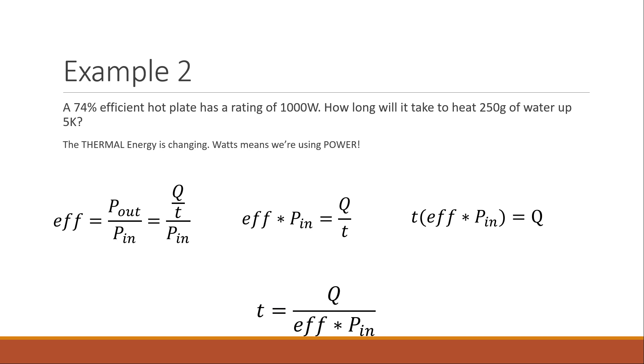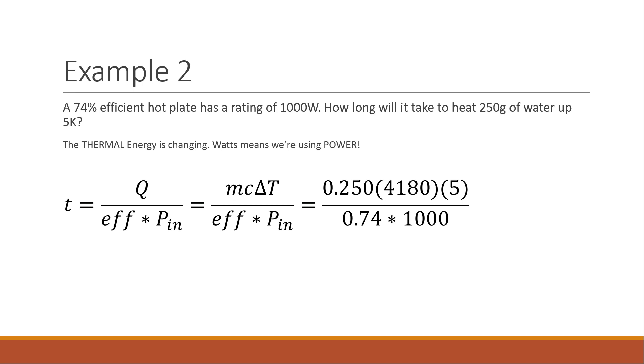My algebra is complete. I can start plugging in my numbers. T is Q over efficiency times power. Remember Q heat formula is mc delta T. The mass 0.250, remember 250 grams, everything needs to be in kilograms. So that's why that 250 grams turns into 0.250. The specific heat capacity of water is 4180. If you don't remember that, you can check it up in your notes. And delta T is the change in temperature. We're heating it up 5 Kelvin. I didn't say it's getting to 5 Kelvin. I just said it's heating up 5 Kelvin in total. The efficiency 74%. Notice how whenever I'm using my calculations for efficiency in my formula, my percent is always in decimal form. So that's why it's 0.74, multiplied by the input power, that's the hot plate, 1000. Crunch that into your calculator. It takes about 7 seconds.